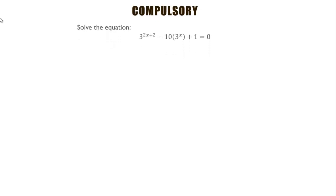Alright, so you want to do some small revision for the coming exams. We have this question: solve the equation 3^(2x+2) minus 10 times 3^(x+1) is equal to 0. This is on indices, so let's quickly see how we go about this.